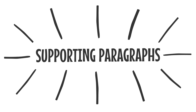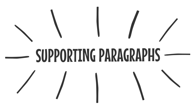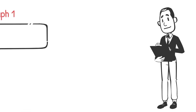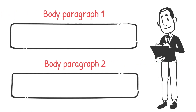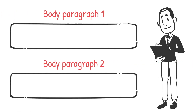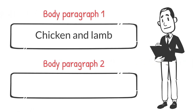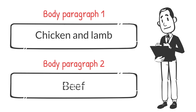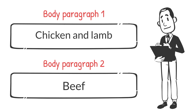Now let us focus on how to write our supporting paragraphs. We can have two body paragraphs based on the trends. Since chicken and lamb had a downward trend, we can describe them in one paragraph, and beef in another paragraph since it had an upward trend.